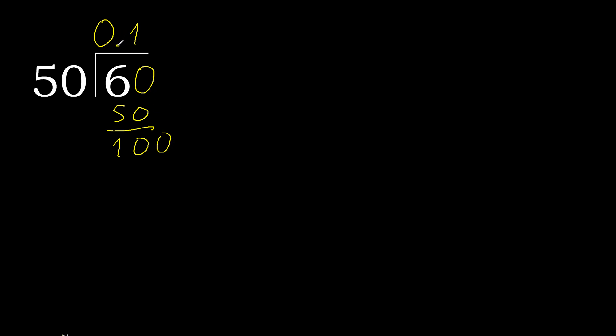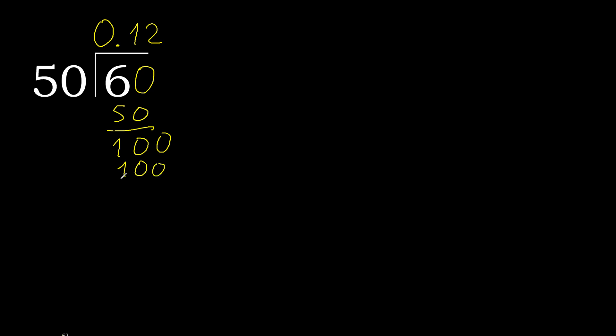The point is here. 100. 50 multiplied by 2 is 100. Subtract: 0. 0 — therefore finish it.